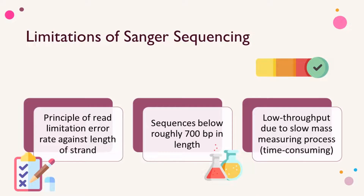Sanger sequencing is not without its limitations. Given the principle of read length limitation and error rate against length of strand — for example when the sequencer is processing 700 versus 701 base pairs compared to 1000 versus 1001 base pairs — since error rates average around 0.1 to 1% of bases sequenced, a longer strand does have a higher error rate. Sequences below 700 base pairs would be optimal for capturing low error rates.